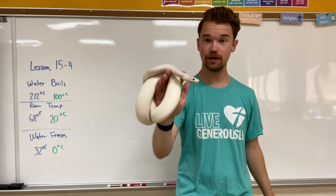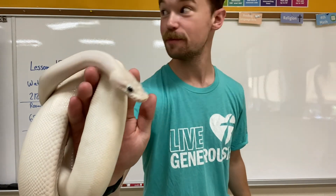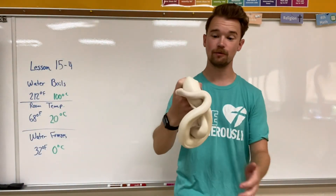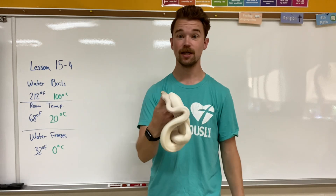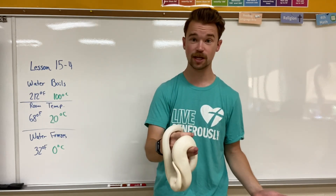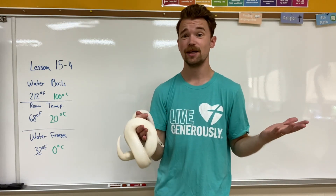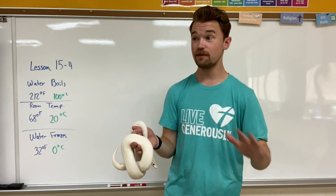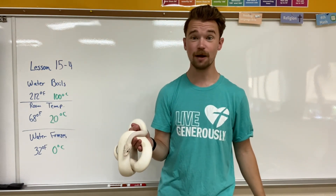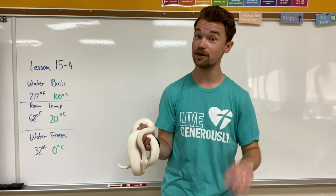Phoebe is our class pet. She is a ball python and she's a big, big sweetheart. The thing that Phoebe really likes more than anything else is staying warm. She's a cold-blooded creature that loves to stay warm because she can't produce her own heat. Having her cage at the right temperature helps her stay alive, healthy, and most importantly, happy.